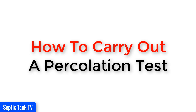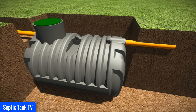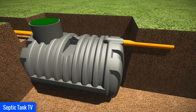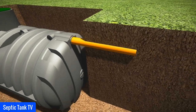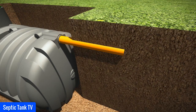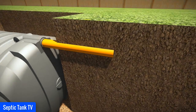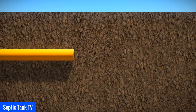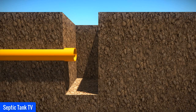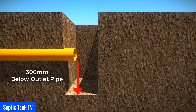So how do you carry out a percolation test? You need to first of all work out where you're going to install your septic tank, then work out where the outlet pipe will be. Once you've done that, you then need to dig a hole 300 millimeters square to a depth of 300 millimeters below the level of the outlet pipe.